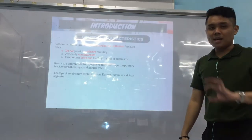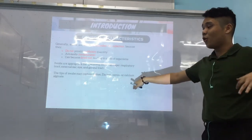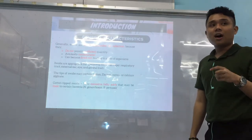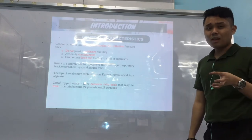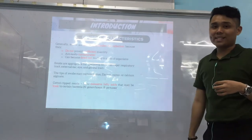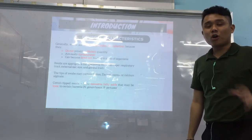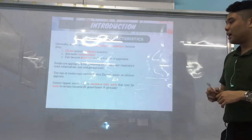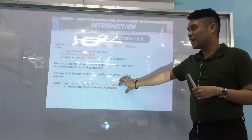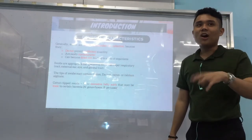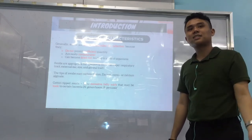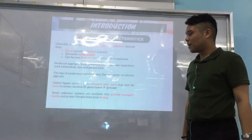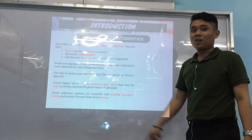The tips of swabs may be cotton — most common — dacron, rayon, or calcium alginate. Cotton tip swabs are not advisable for specimens containing Neisseria and Bordetella, because cotton has excessive fatty acids that may be toxic to Neisseria gonorrhoeae or Bordetella pertussis. Please take note — this comes up on board exams.